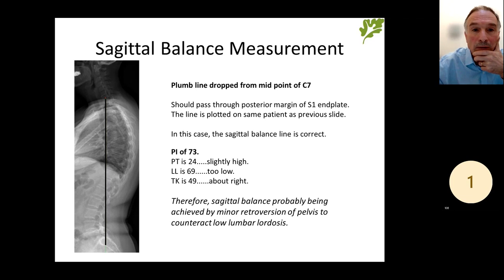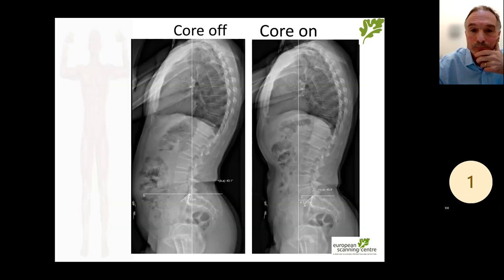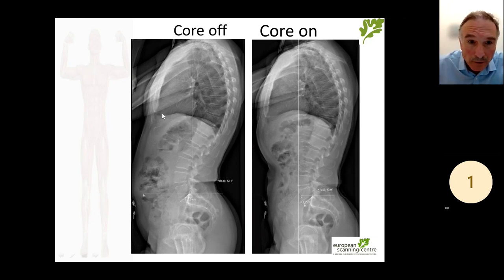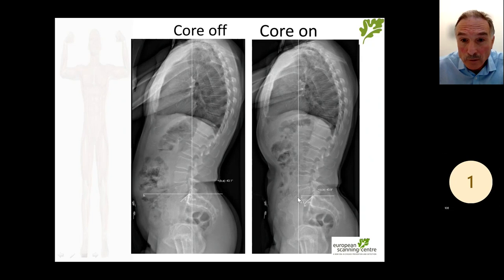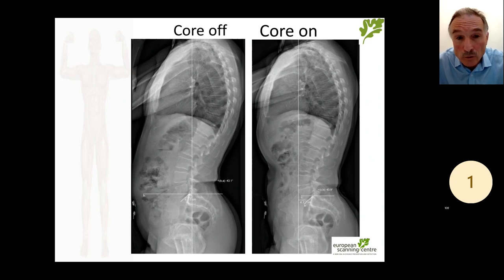We can actually vary our own sagittal balance. This is somebody doing a core exercise. Standing with core muscles switched off, their belly is slightly protuberant, and the C7 line dropped down is right on the posterior border of the S1 end plate — completely normal. When the core muscles are activated, the belly flattens and the lumbar lordosis becomes shallower. The C7 line has now drifted quite a long way forward. That shows how you can vary your own sagittal balance just by using your core muscles — very important in controlling underlying posture, particularly when a patient with back pain goes off to rehabilitation.